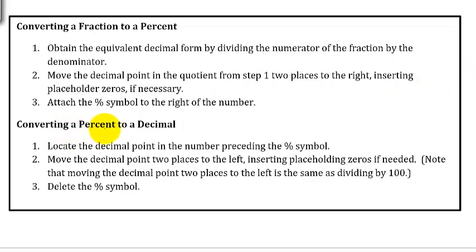If you want to convert from a percent to a decimal, locate the decimal point in the number preceding the percent symbol, then move the decimal point two places to the left, inserting placeholder zeros if needed. Note that moving the decimal two places to the left is the same as dividing by 100, and delete the percent symbol.